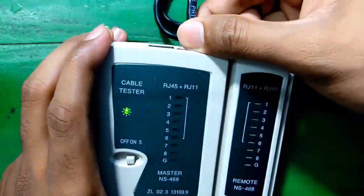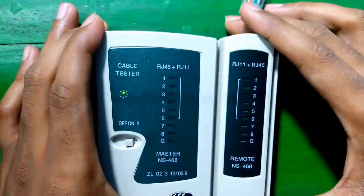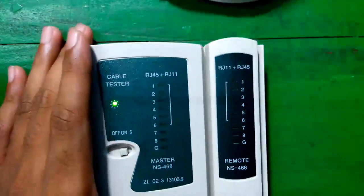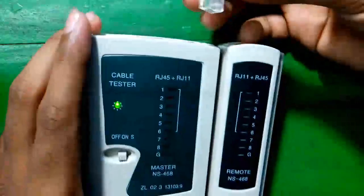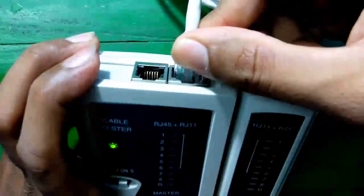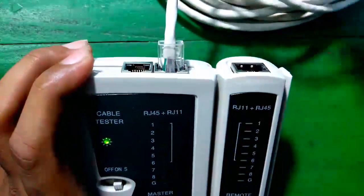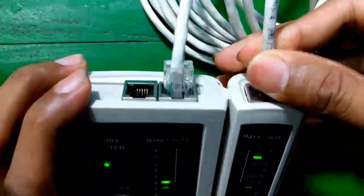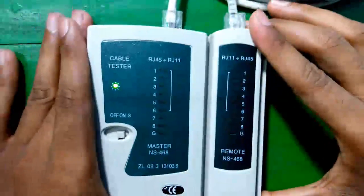Now, if we remove any of the connector, the lights will go off. Now, let's check the crossover UTP cable using the machine. Similarly, we connect the one end to the master device and the other end to the slave device and check the connectivity.